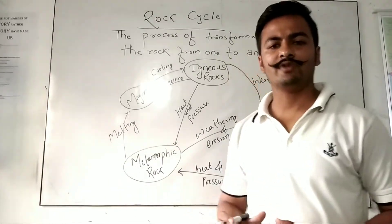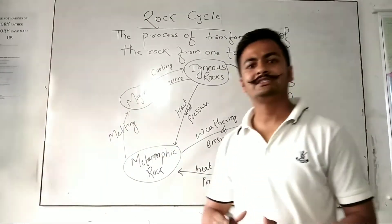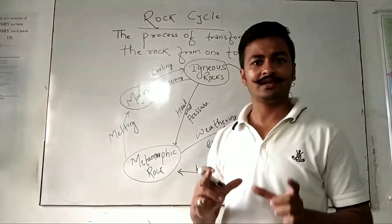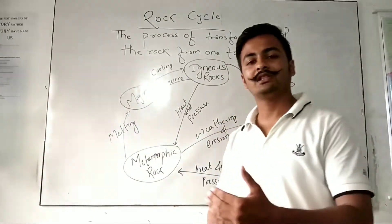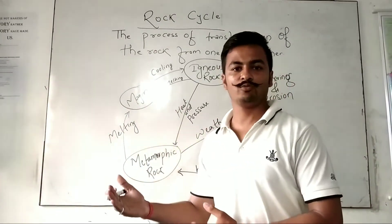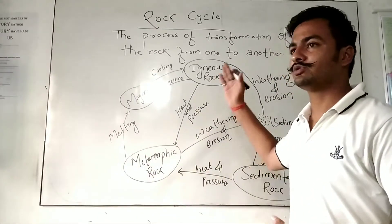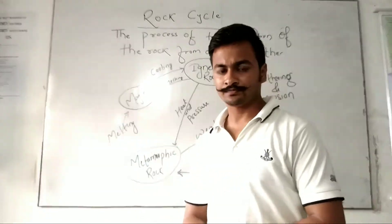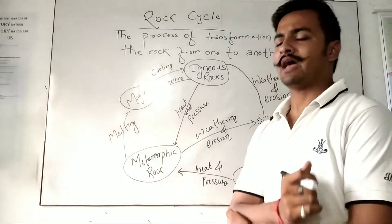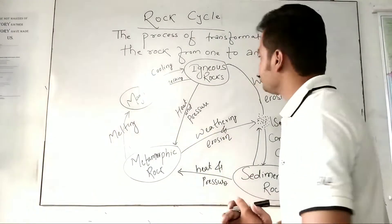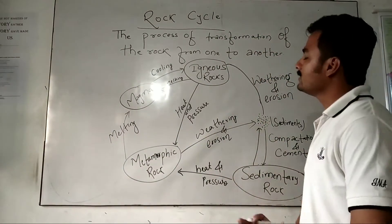Simply, we say when rock changes its form, this process is known as rock cycle. How does this happen? Let's see. First of all, let's begin with the primary rock that is known as igneous rock.